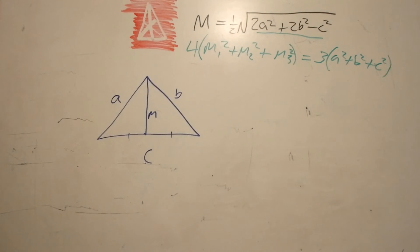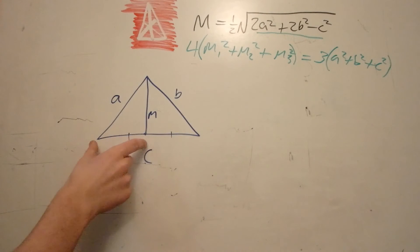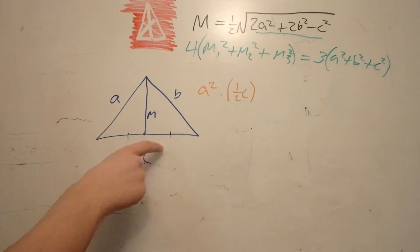At this point, what we're going to use is Stewart's theorem, which says that a squared times this portion plus b squared times this portion equals m squared times the whole portion plus half times half times whole. We have to notice that c will split these into two equal spots.